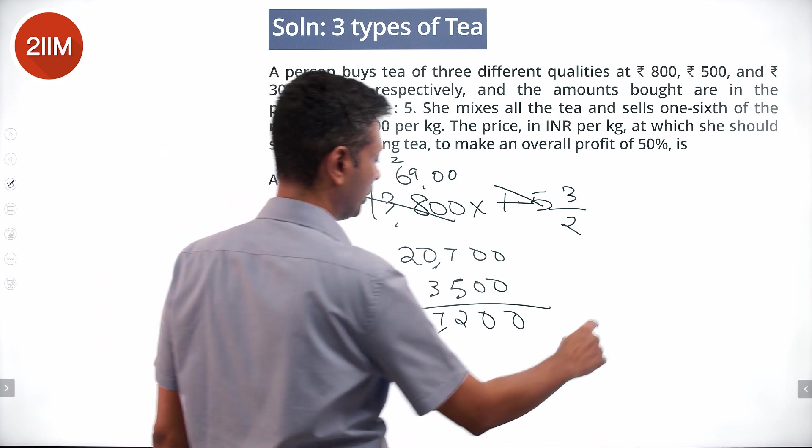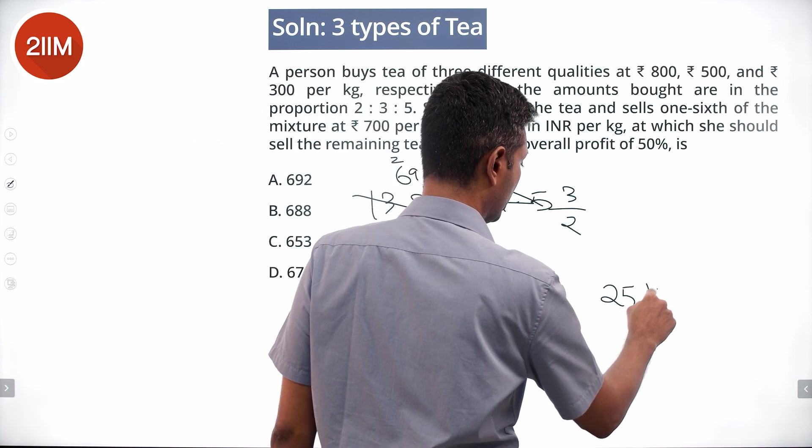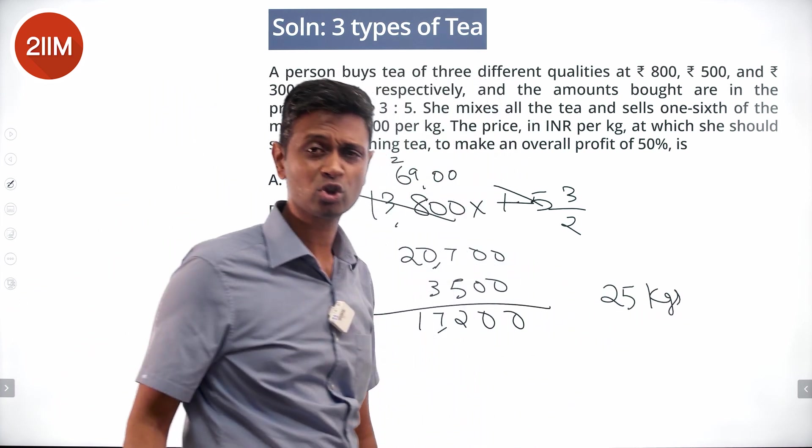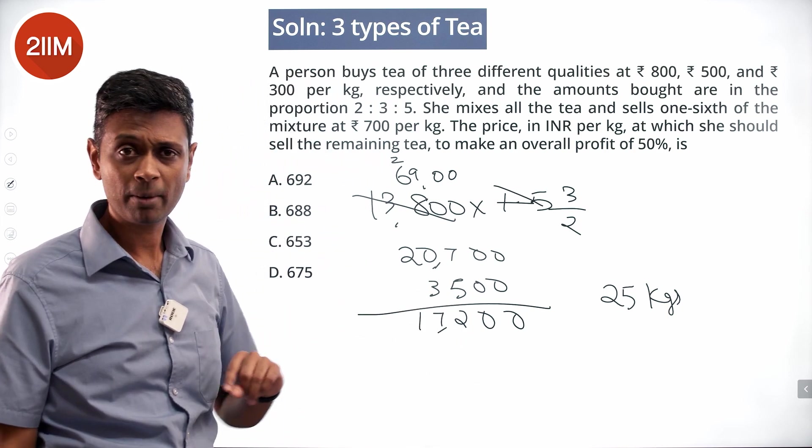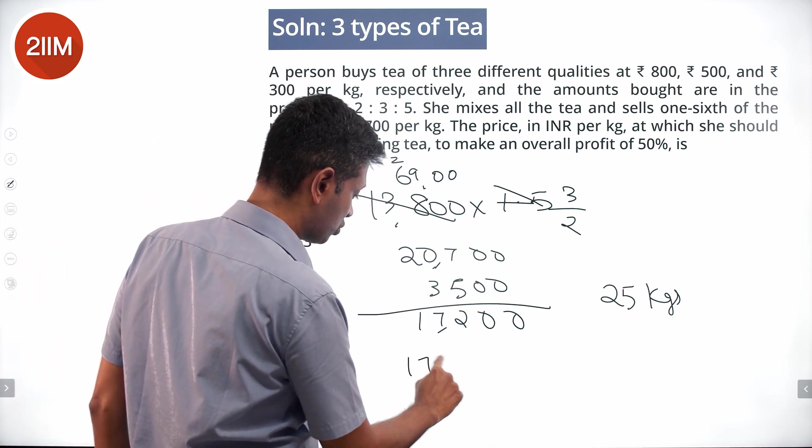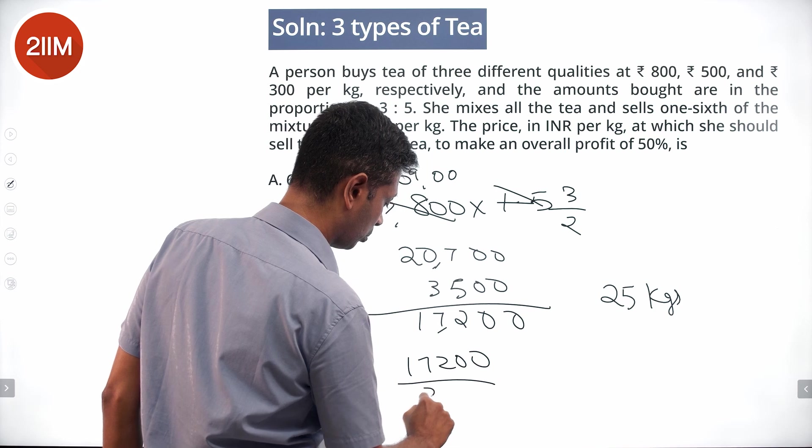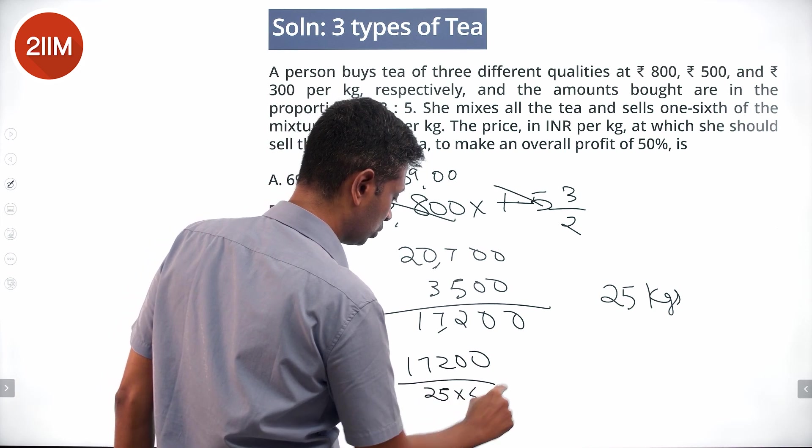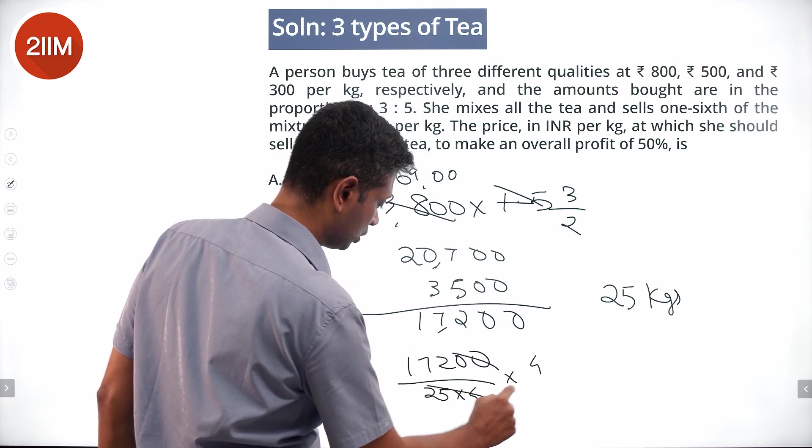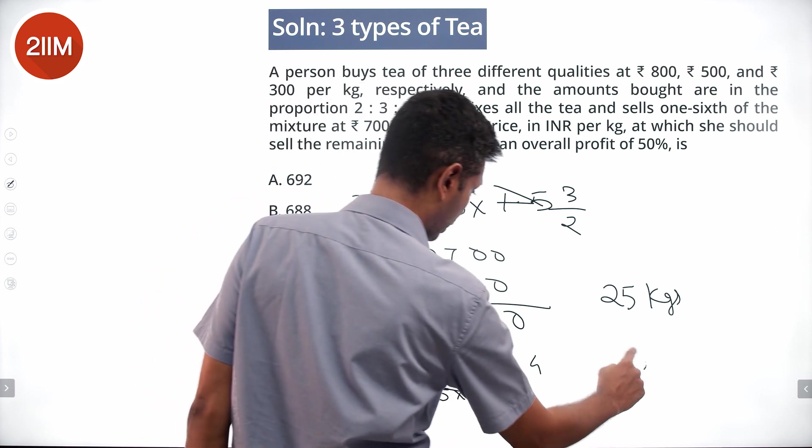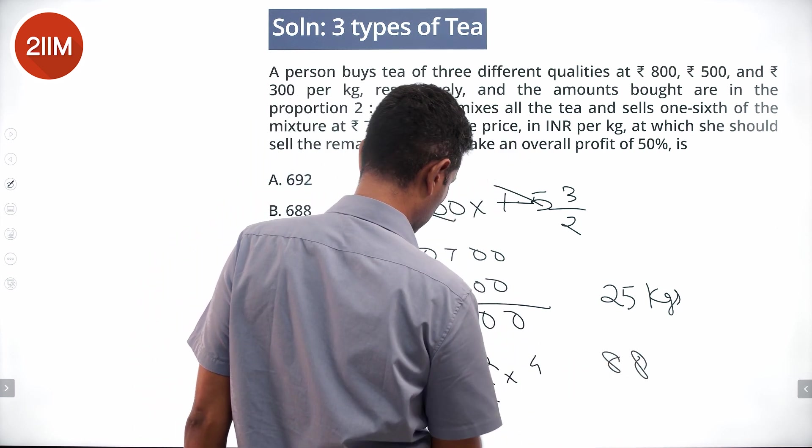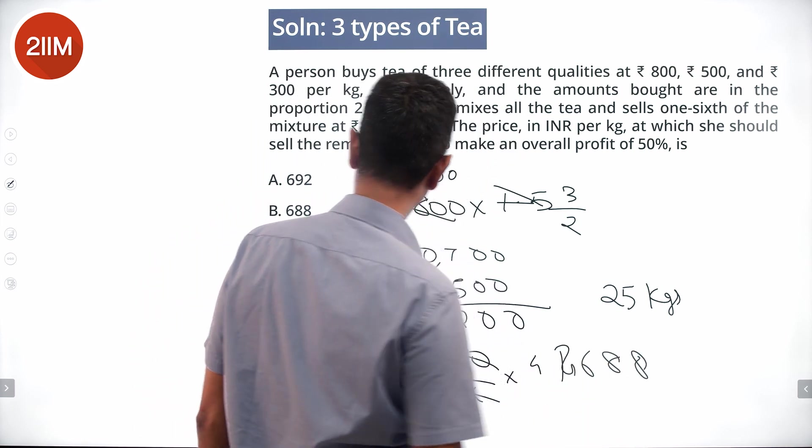This has to come from 25 kilograms. Why? She totally bought 30 kilograms, sold 5, remaining 25. Price per kilogram is 17,200 by 25 into 4 into 4 into 4. 172 into 4. 688 rupees per kilogram.